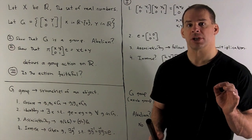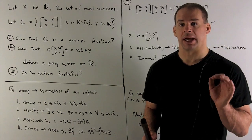Three questions. First, show that G is a group. Is it abelian?